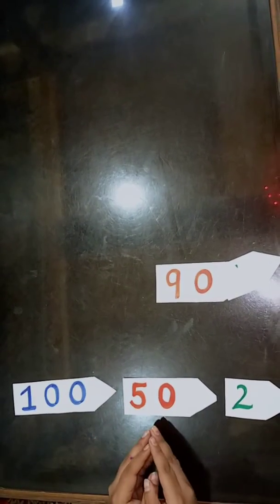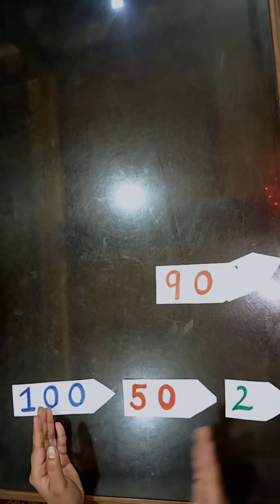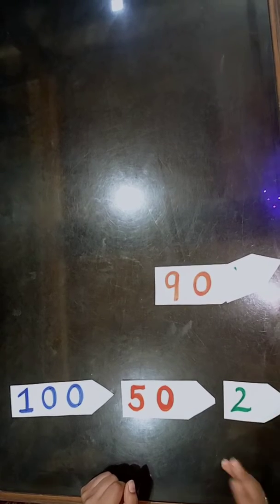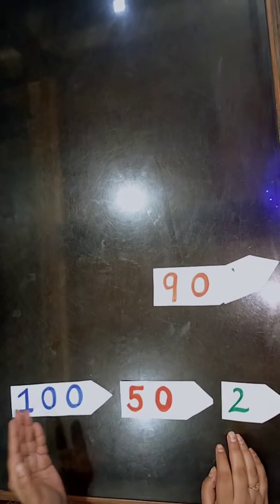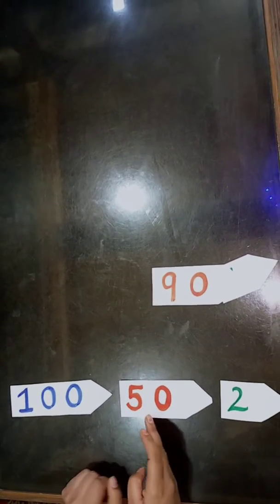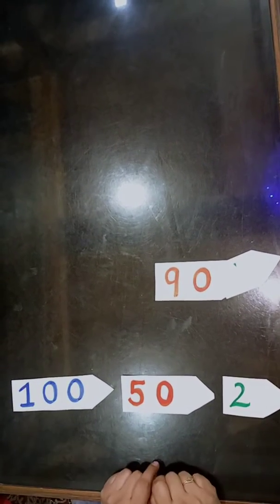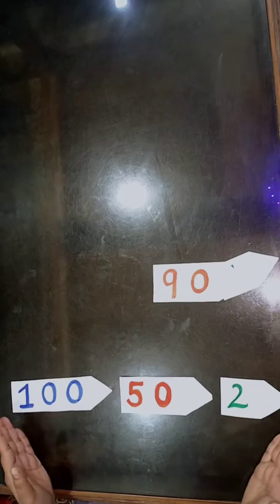So right now we are having 150 means 5 10's or you can say 2 1's is 2. So we can say 100 plus 50 plus 2 is equal to 152. So this is the expanded form of a number.